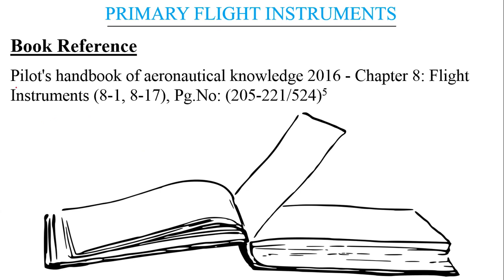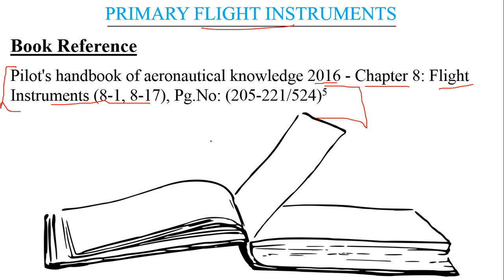I also recommend everyone to read the book reference for this topic. Reading a topic in a book provides deeper knowledge. For primary flight instruments, the Pilot's Handbook of Aeronautical Knowledge 2016 version — freely available on the Federal Aviation Administration (FAA) website — is recommended. Chapter 8, Flight Instruments, provides very simplistic yet deep knowledge about this topic, and the illustrations are fully infographic so you can visualize everything you read.